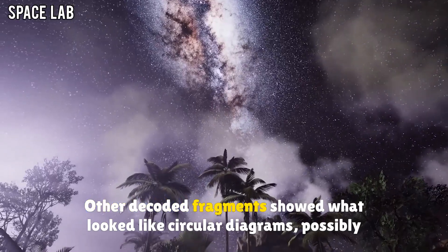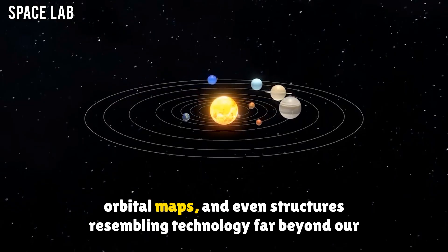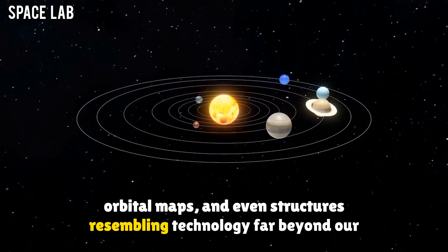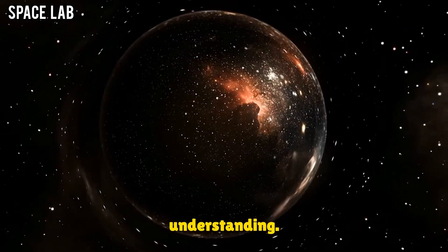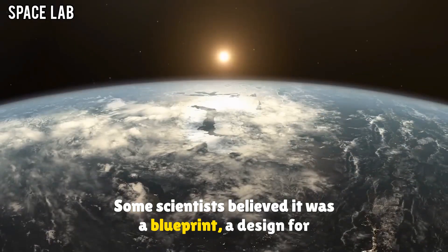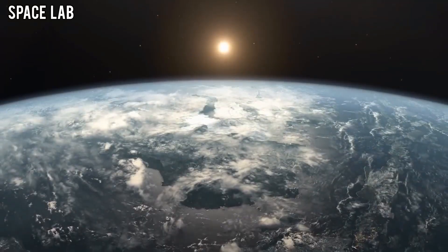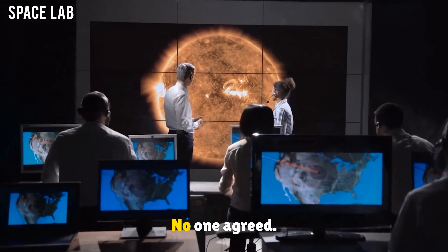Other decoded fragments showed what looked like circular diagrams, possibly orbital maps, and even structures resembling technology far beyond our understanding. Some scientists believed it was a blueprint, a design for something—a machine, a portal, a weapon. No one agreed.